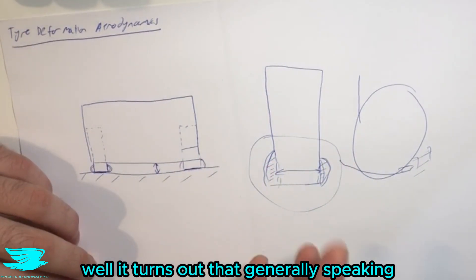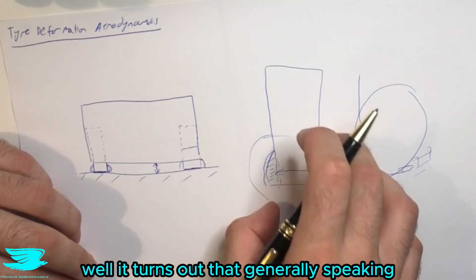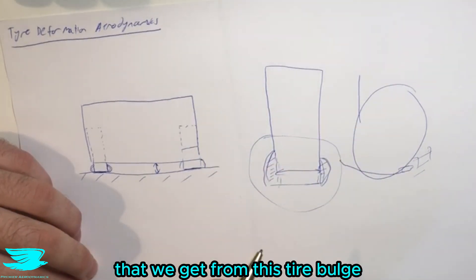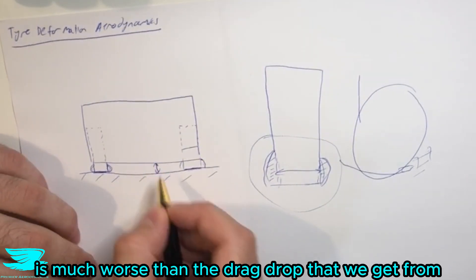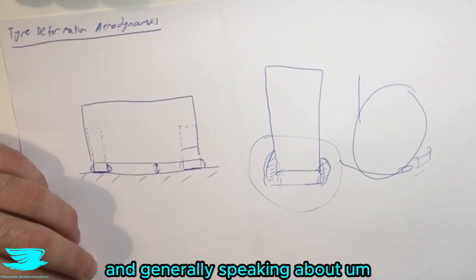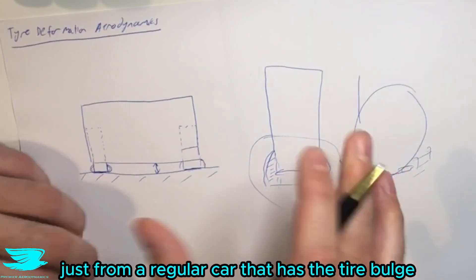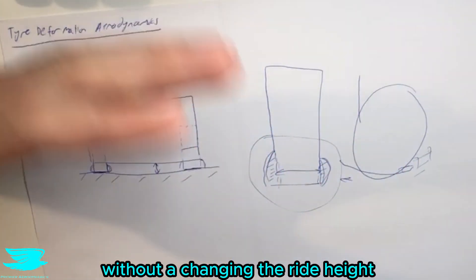Well, it turns out that generally speaking, the drag increase that we get from this tire bulge is much worse than the drag drop that we get from the ride height. And generally speaking, about half the increase that we would get normally just from a regular car that has the tire bulge without a change in ride height.